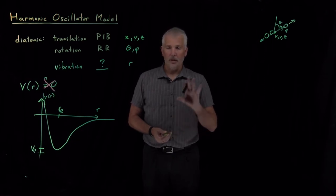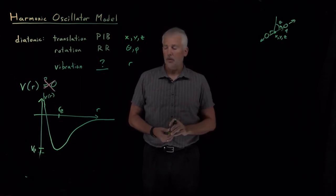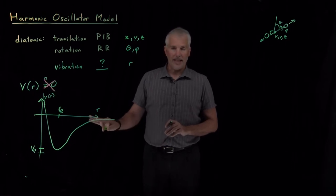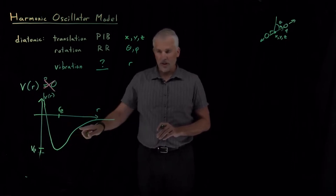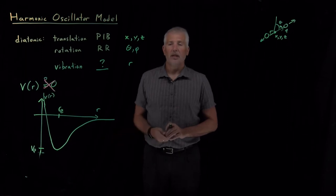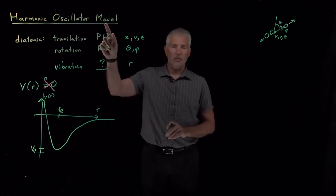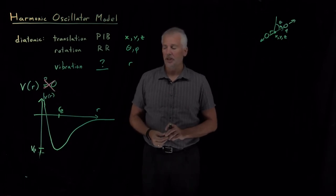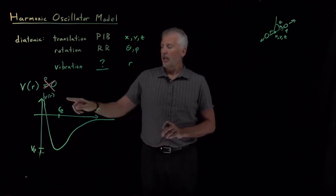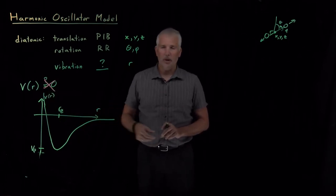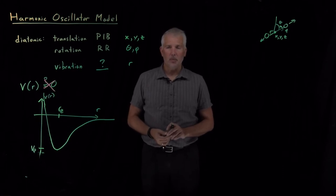So what we'll do is what physical chemists often do when we're presented with a problem that they can't solve. I don't know the right equation, and even if I did, I couldn't solve it. So what a physical chemist often does in these circumstances is to come up with a model, an approximation, a simplification. So essentially, we're saying, I can't solve this problem. Let me think of a simpler problem that I will be able to solve.